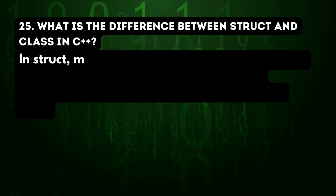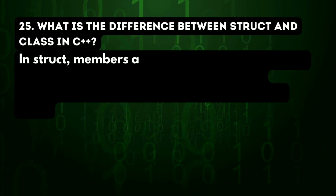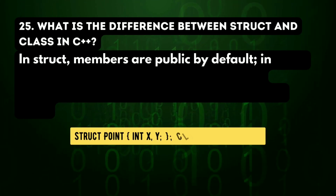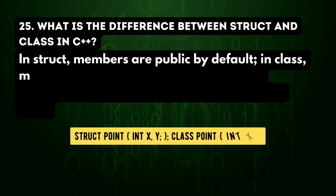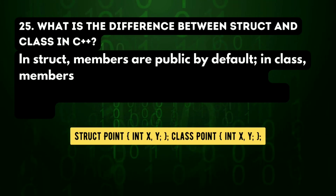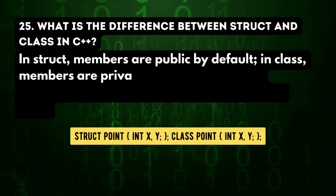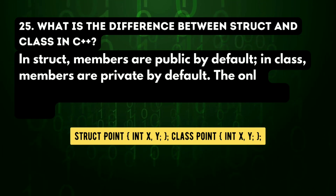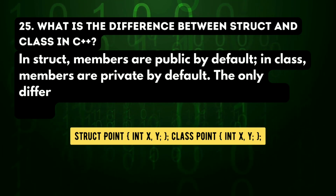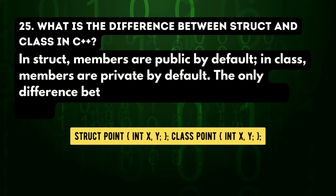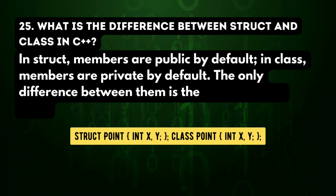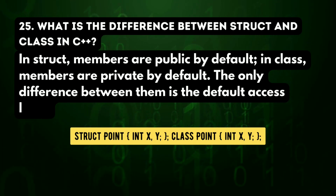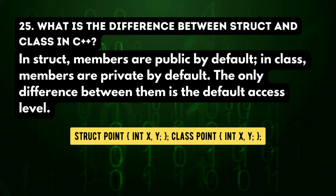25th question: what is the difference between struct and class in C++? In struct, members are public by default. In class, members are private by default. The only difference between them is the default access level.